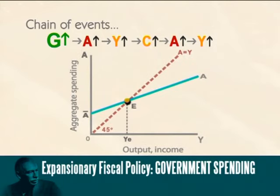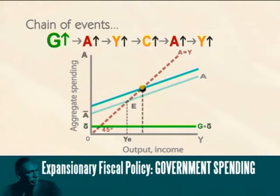In our goods market diagram, the impact of an increase in government spending is presented as follows. An increase in government spending, which as we know is autonomous, pushes the vertical intercept — the A-bar — upwards, and the total spending curve shifts.